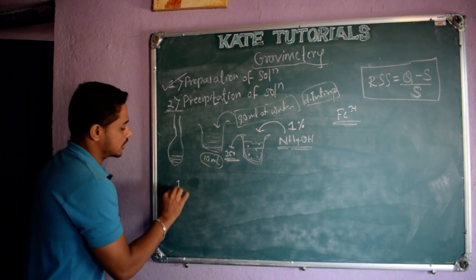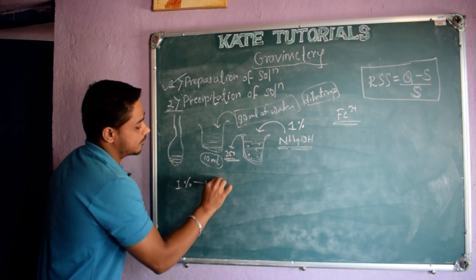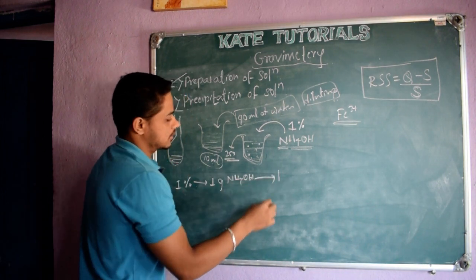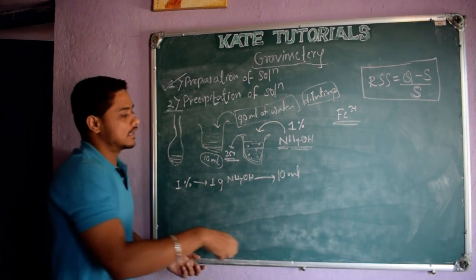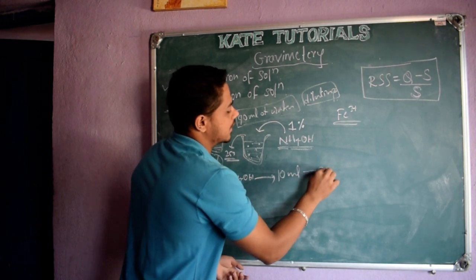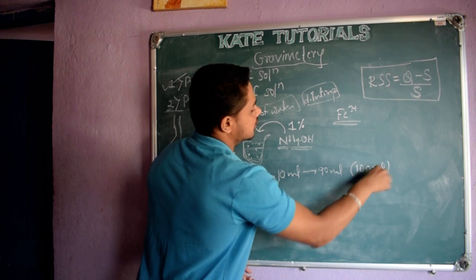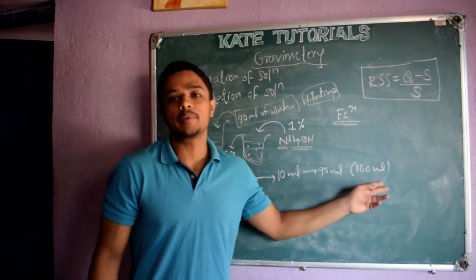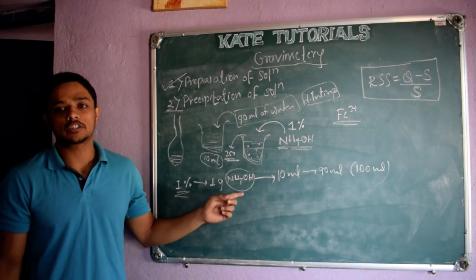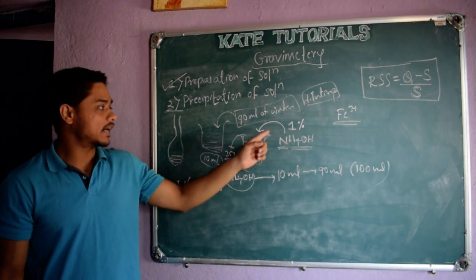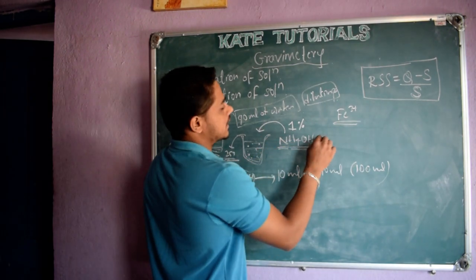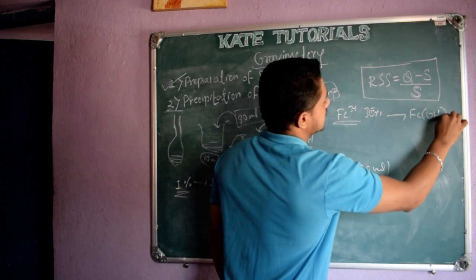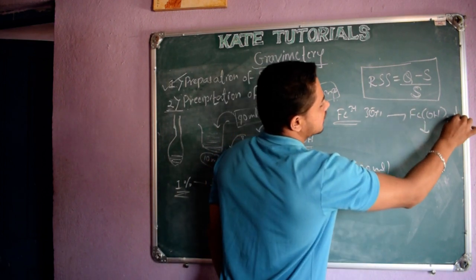1% means 1 gram of ammonium hydroxide — I will take it, add first 10 ml of water to dissolve it, and further add 90 ml so that I get 100 ml of solution. That is, 1 gram in 100 ml of water gives me 1% ammonium hydroxide solution. Why I am going to add ammonium hydroxide? The reason is it gives OH⁻. So, 3 OH⁻ will react to form Fe(OH)₃. And we know this is precipitated — I will show it by a downward arrow: precipitated.